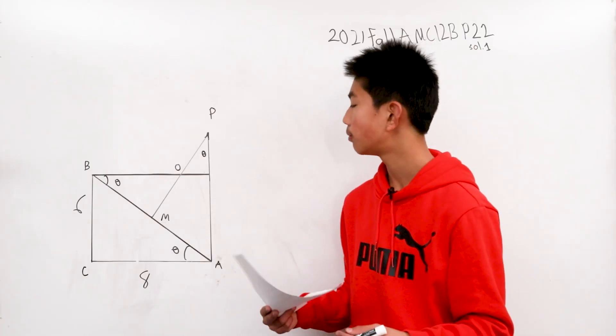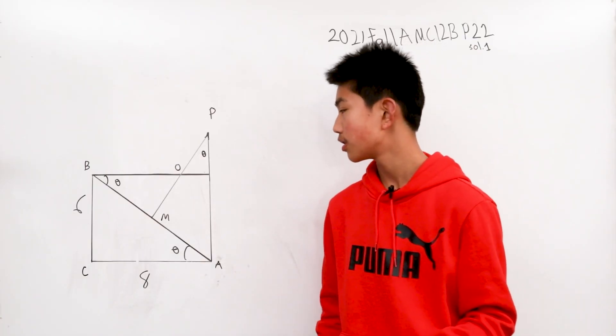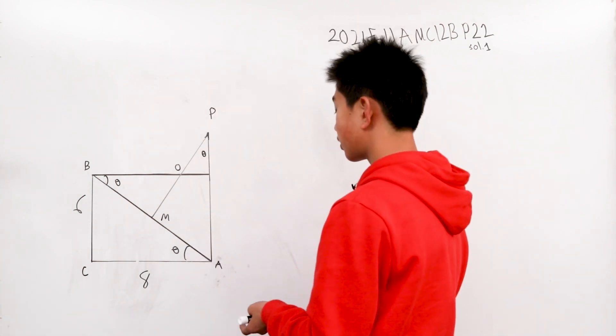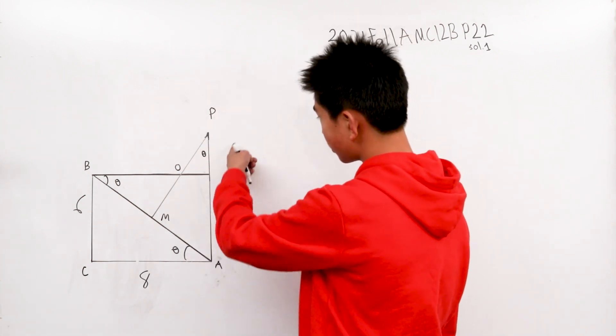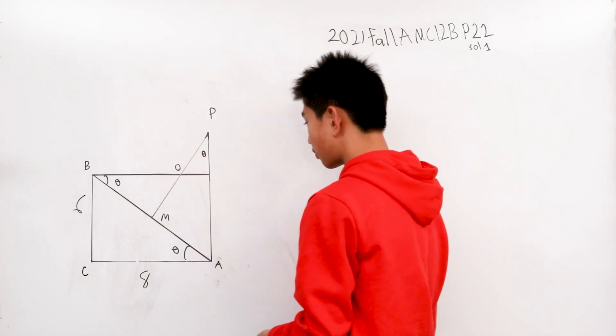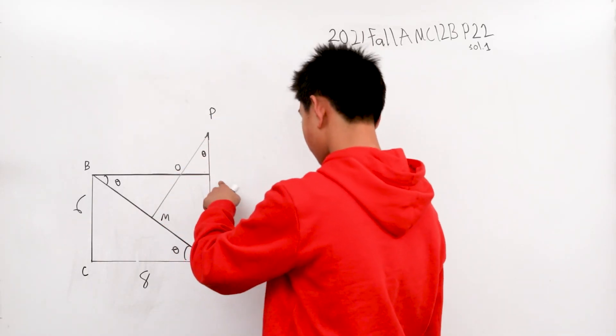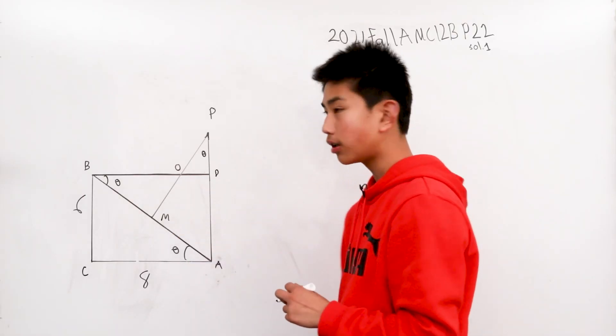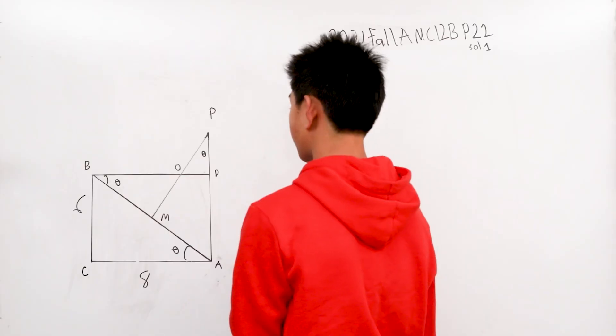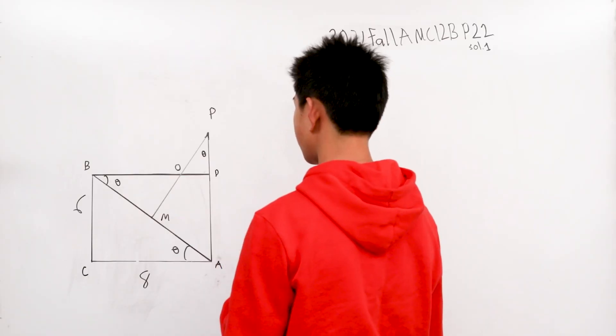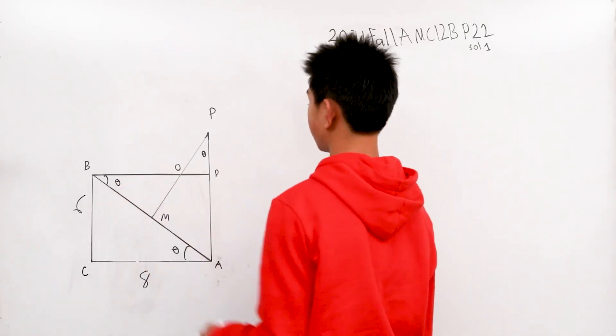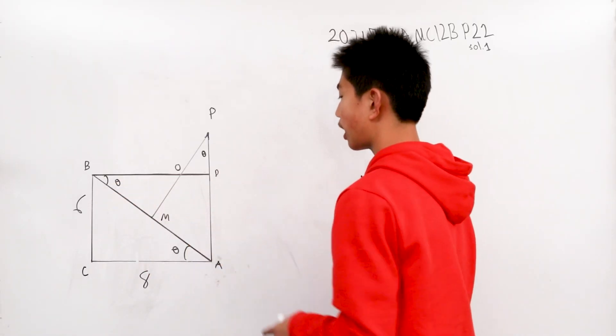We have all these side lengths, and we can draw point P right here, or point D right here, where ABCD is a rectangle. Point P is where when you draw a line from P to B, it's perpendicular at the midpoint. We'll call that M for midpoint.